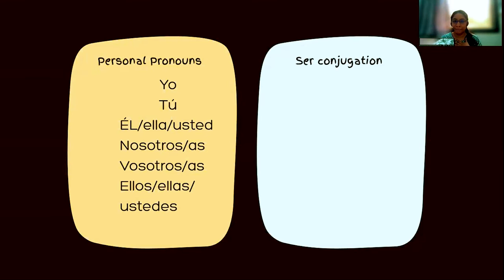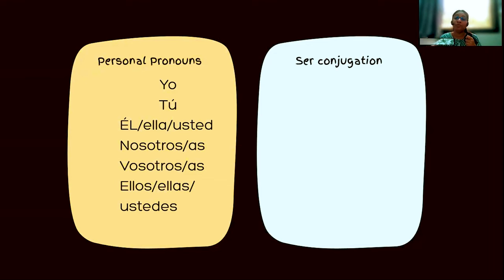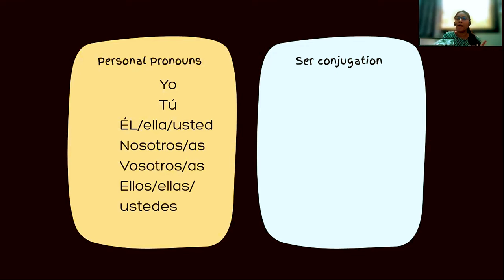'Él' is 'he,' 'ella' is 'she.' 'Nosotros' and 'nosotras' mean 'we' — nosotros for masculine, nosotras for feminine. Then we have 'vosotros' and 'vosotras,' the plural 'you all.' Use 'vosotros' for a group of guys, 'vosotras' for only girls. For a mixed group, we default to the masculine form.